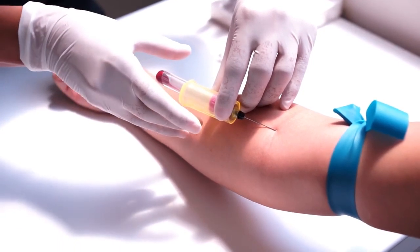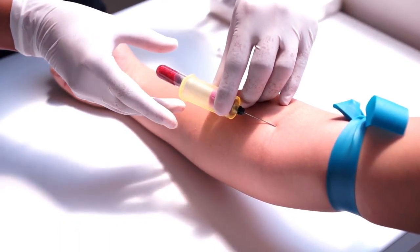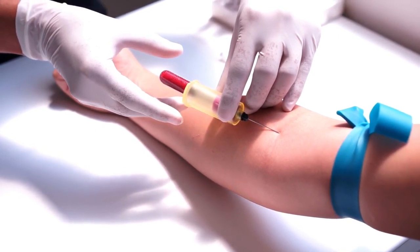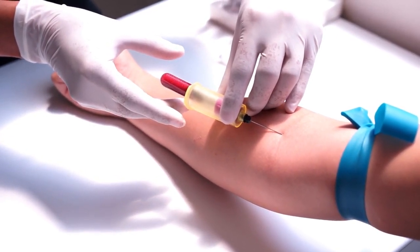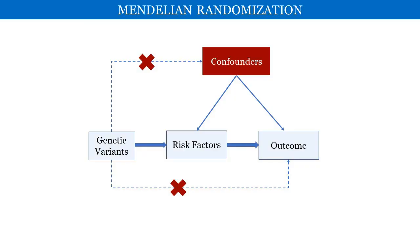For example, we recently studied whether blood levels of insulin are causally related to colorectal cancer risk by using a statistical method known as Mendelian randomisation. Mendelian randomisation uses genetic variants as instruments for risk factors to assess evidence for a causal relationship between a risk factor and a disease.